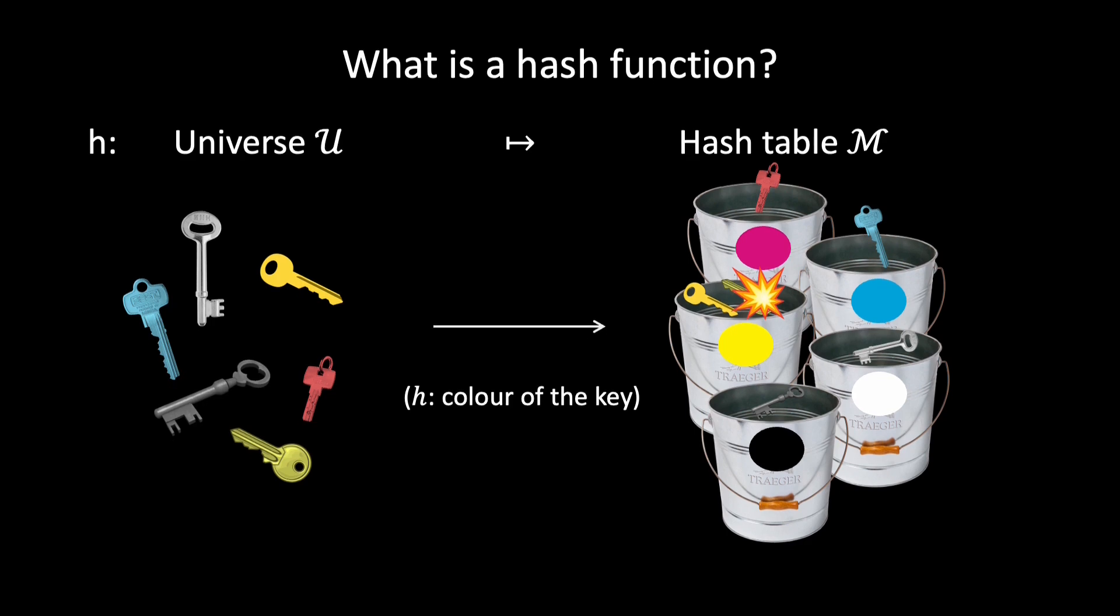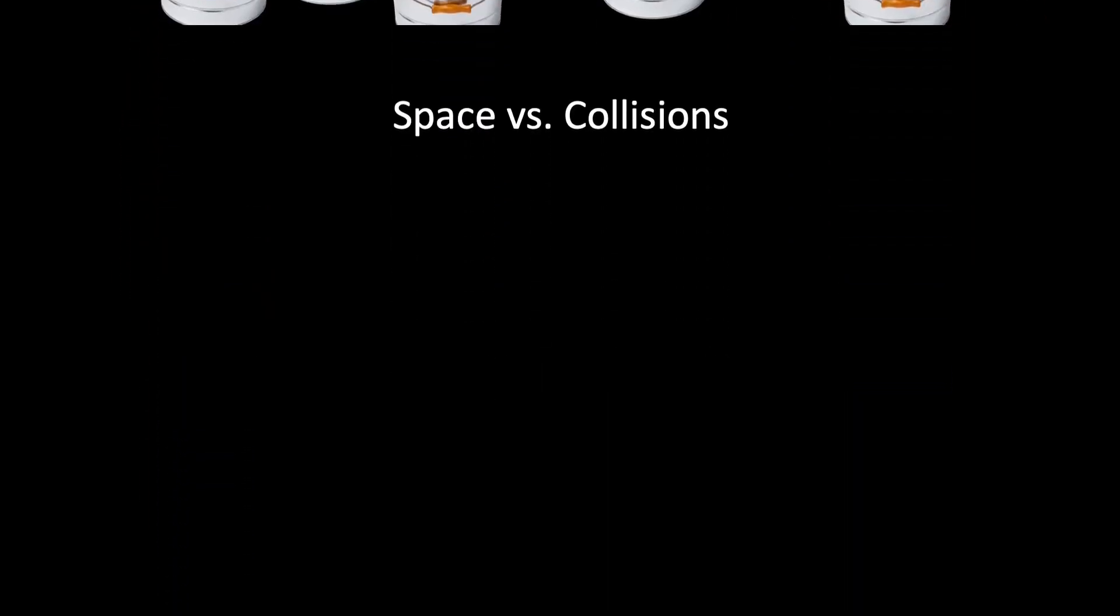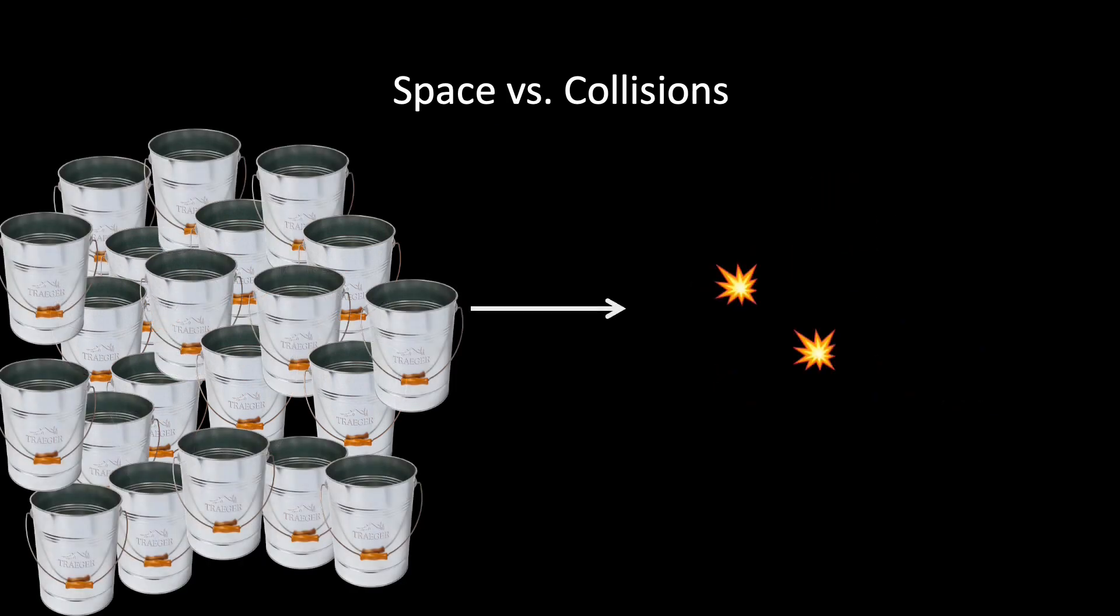It seems that we need more buckets. Intuitively, it is clear that if we have only a few buckets, we will get lots of collisions. And if we use lots of buckets, we will have fewer collisions. But how many buckets do we need, exactly, to expect a good result?